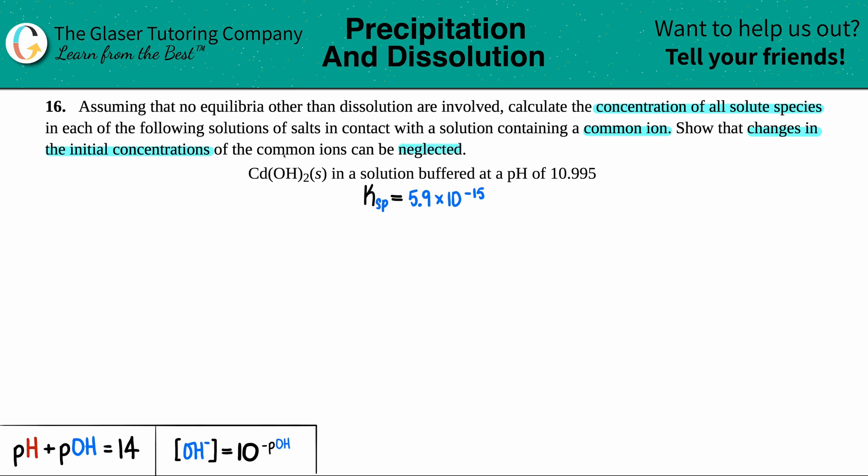We have Cd(OH)₂ as a solid in a solution buffered at a pH of 10.995. I had to go into the back of a textbook to find out what the Ksp value is, the solubility product of Cd(OH)₂. Since we're talking about a solid that's being dissolved, undergoing dissolution, it has to have a Ksp.